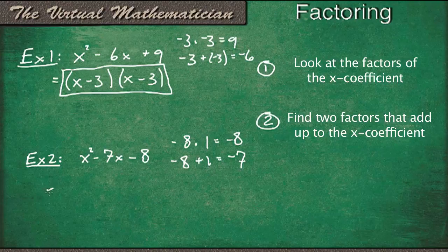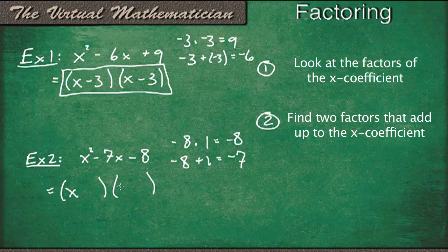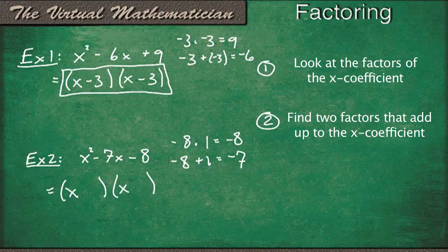So that means that once again, this is going to factor into the product of two first degree polynomials. So they're both going to have their x's in there. And the numbers that are going to work are going to be negative 8 and positive 1. So that means that this factors into x minus 8 times x plus 1.